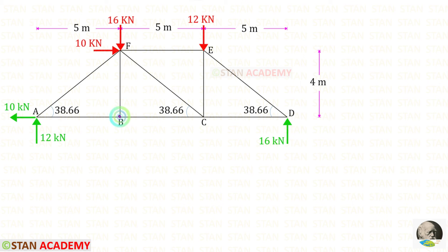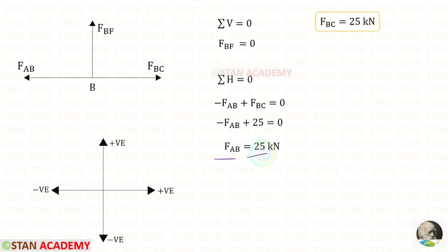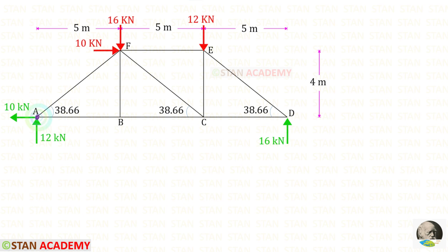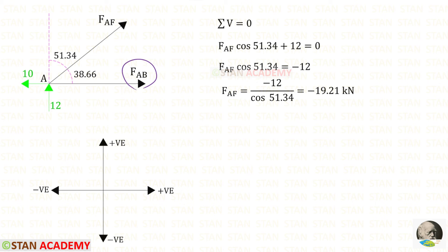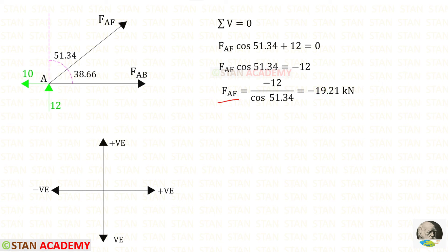Now let us take joint B. In the vertical direction there is only one member, FBF, so FBF = 0. Applying Sigma H = 0: FBC is acting left (negative) and FAB is acting right (positive), giving FAB = 25 kN. Taking joint A, FAB is already found. Using Sigma V = 0 to find FAF: VA = 12 kN is acting upwards (positive). FAF is inclined, resolved vertically using cos 51.34 (upwards, positive). For FAF we get minus 19.21 kN. Let us enter all of the member forces.